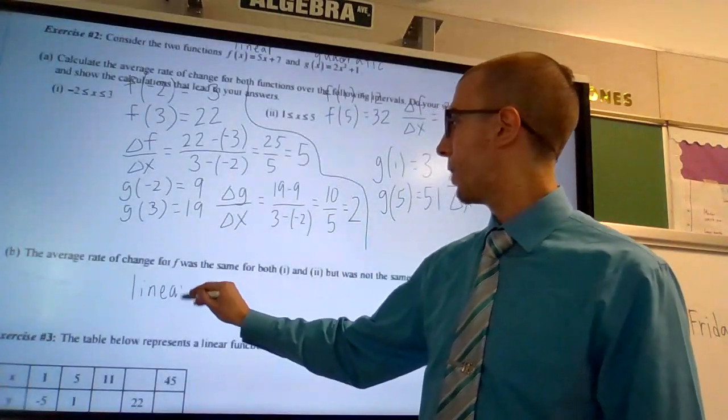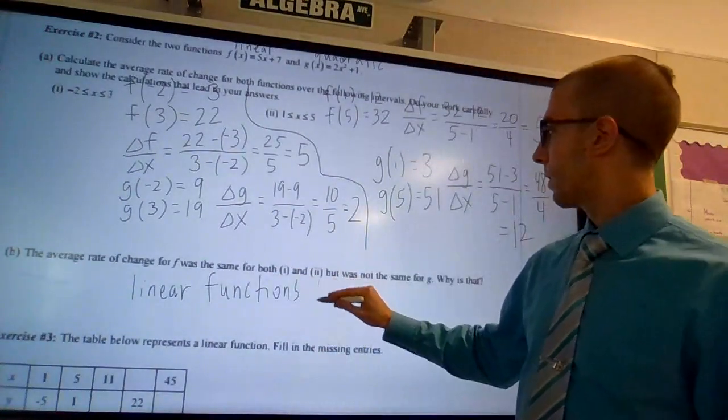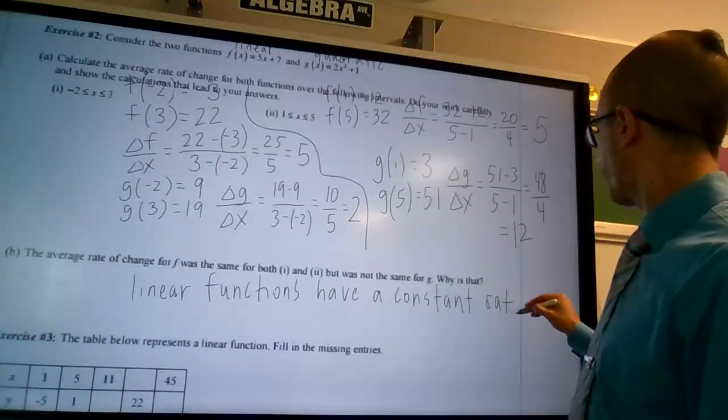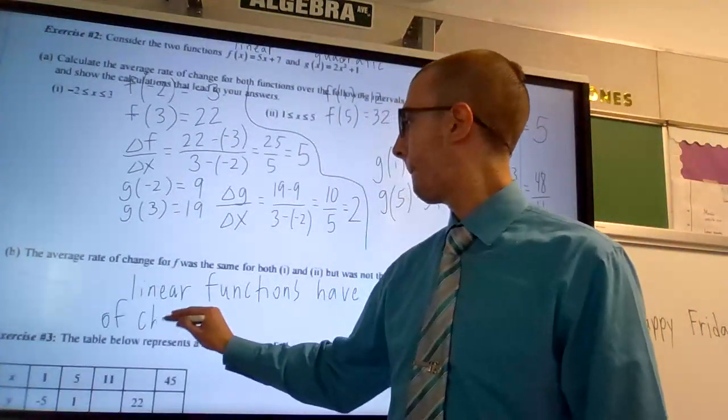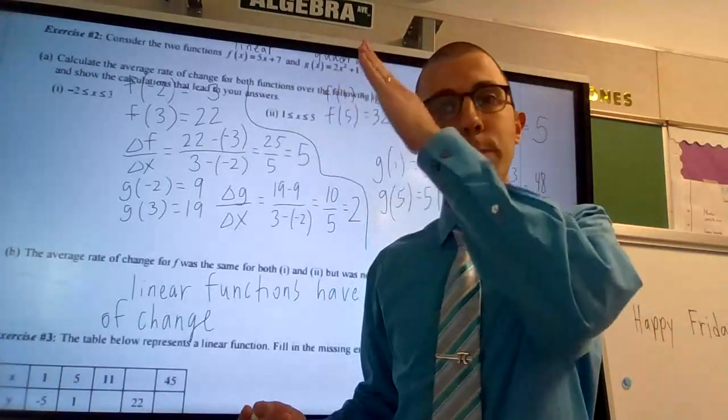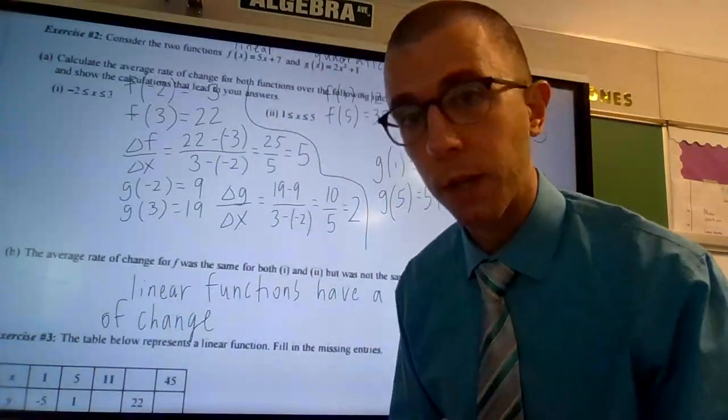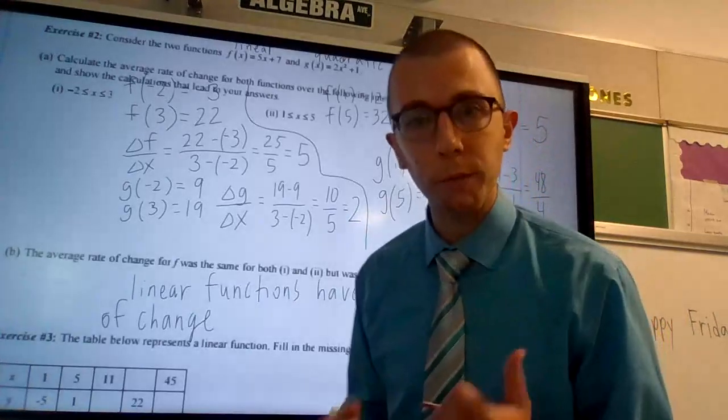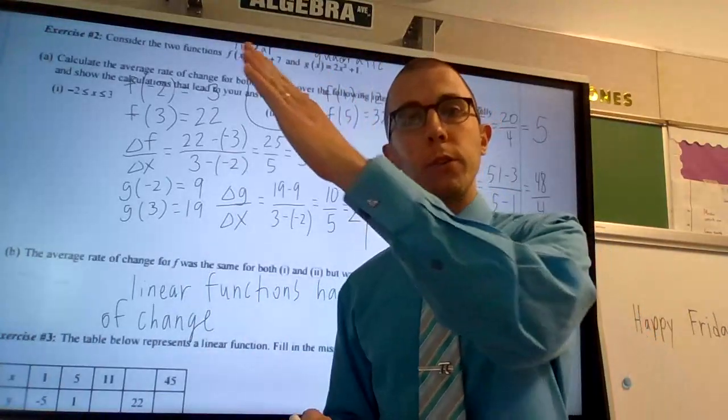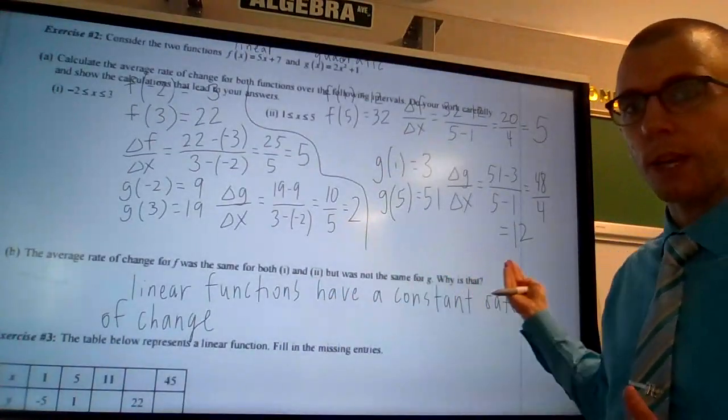Well, linear functions, something I hope a lot of us remember from Algebra 1, linear functions have a constant rate of change. Also known as a constant slope, which gives that line a perfectly straight look. A line is perfectly straight. That's just one of the characteristics of a line. And it's perfectly straight because it has a constant slope, a constant rate of change. No matter what x interval you're looking at, that linear function will have the same slope in every interval.